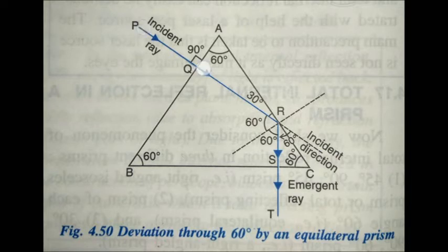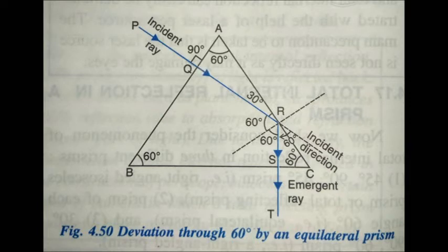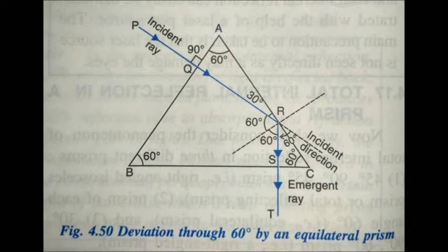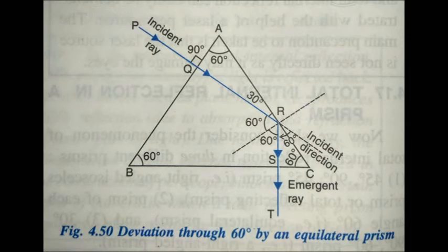Now let us see how total internal reflection takes place in an equilateral prism. A ray of light PQ is incident normally on face AB, so it enters undeviated. The angle A of the prism is 60 degrees and angle AQR is 90 degrees, which means angle ARQ has to be 30 degrees.